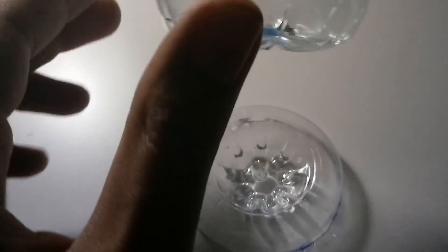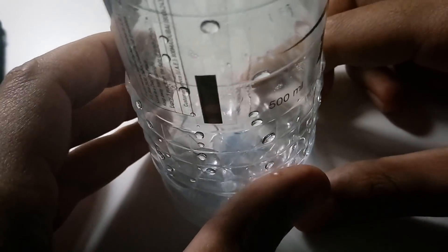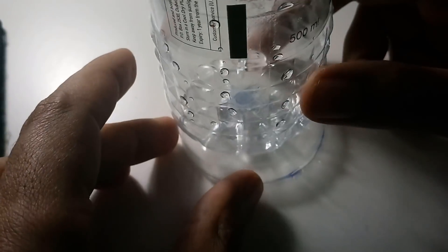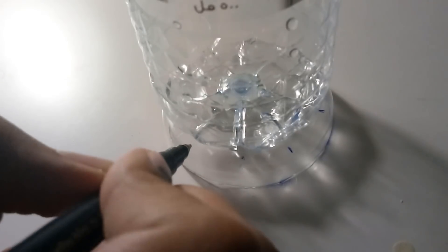Next, we mark the points where the copper wires will be wrapped around. You can either do the measurement and place them about a centimeter apart, but I found another bottle that had exactly 10 increments, so this should do.